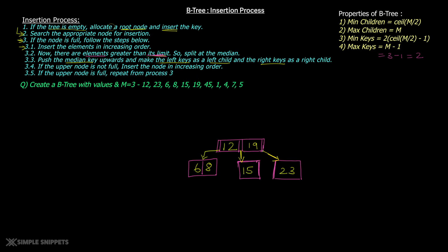Now let's insert 45. Since 45 is greater than 12 and greater than 19, we go to the right of 19. The node there has 23 and one extra space, so we can add 45 directly. We'll insert 45 here. 45 is now inserted.